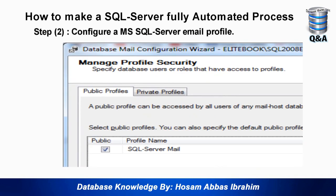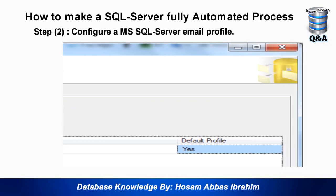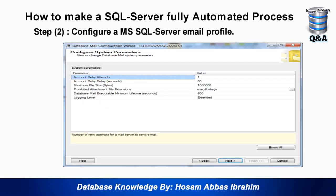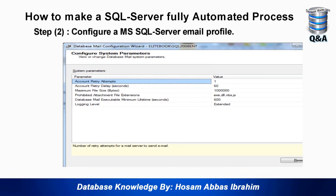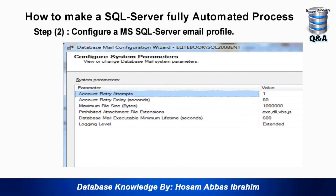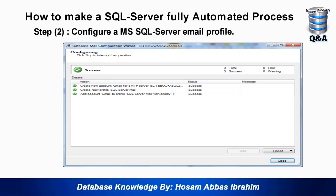Next it shows 'Manage Profile Security'. To allow Microsoft SQL Server to send emails, there must be a default profile — so I mark this profile as public and set it as the default. Press Next, and it shows system configuration parameters. Importantly, you can change the maximum file size in case you need to send a large attachment. Press Next and the profile gets configured.